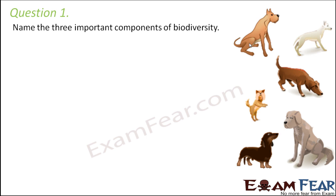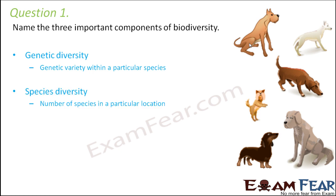Question number one: name the three important components of biodiversity. As mentioned before, biodiversity can happen at many different levels, and based on the level of biodiversity, they have been divided into three components: genetic diversity, species diversity, and ecological diversity.